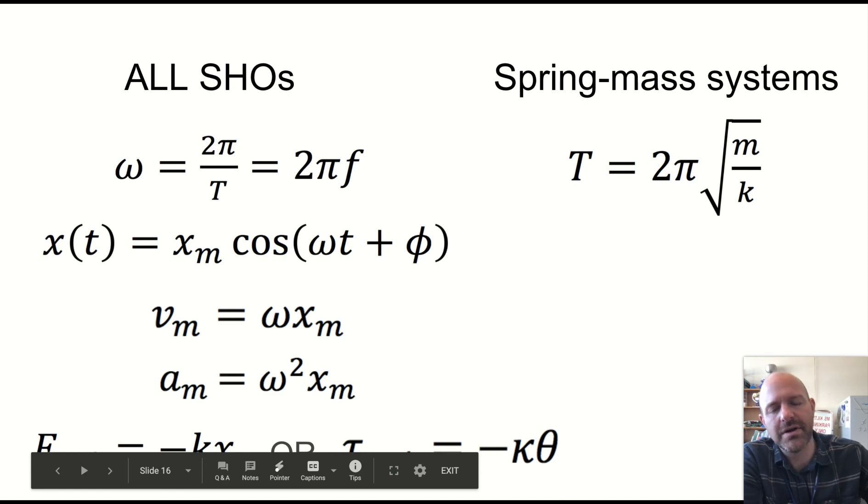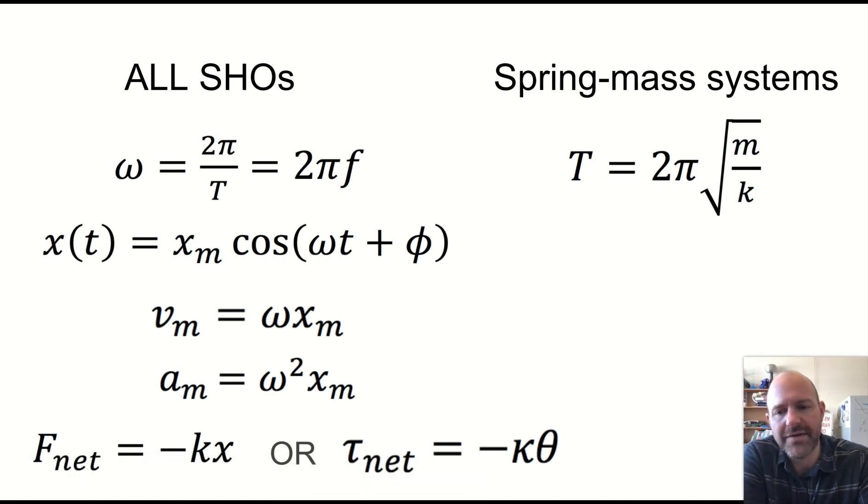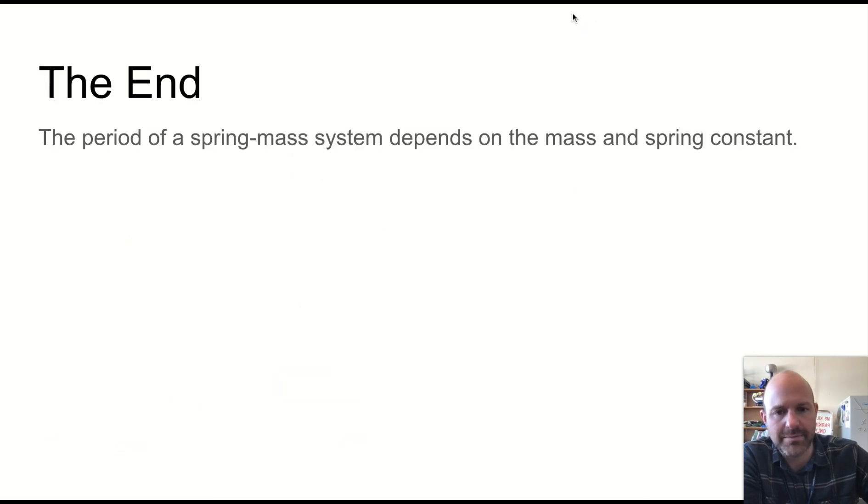I will draw your attention to the very bottom line here on this. It shows not just F net equals negative KX. It also says net torque equals negative kappa theta. So this actually works for things that rotate, like a torsional pendulum. And we'll look at that a little bit as well.